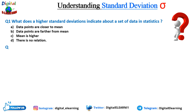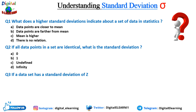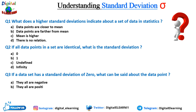Question two: If all the data points in a set are identical, what is the standard deviation? The options are: 0, 1, undefined, or infinity? And the last question: If a data set has a standard deviation of 0, what can be said about the data points? They are all negative, they are all positive, they are all the same, or none of the above?